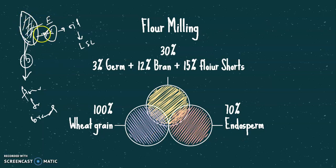But technically it is impossible to remove all endosperm from the germ and the bran. We lose some portion which is about 15% with these byproducts, and that lost product is about 15% which is known as flour shorts.